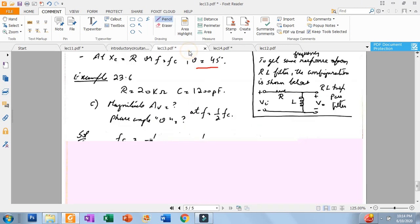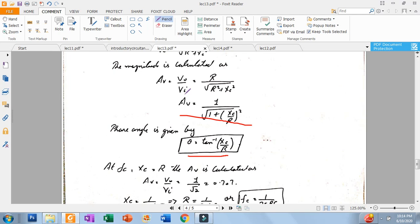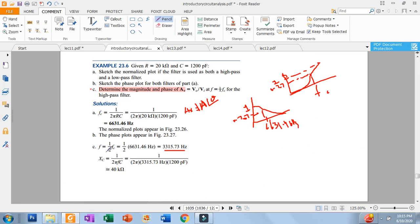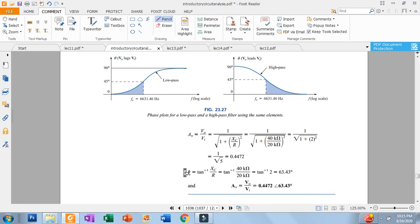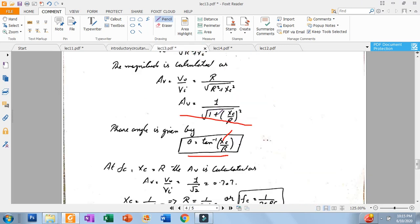What is the formula? The voltage gain formula is V out over Vi equals 1 over root 1 plus XC over R. Here you put the XC value and R value, and this formula will give 0.447.